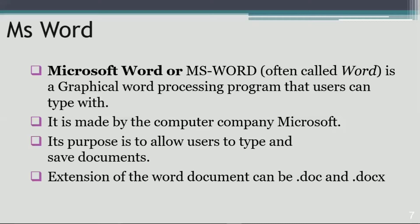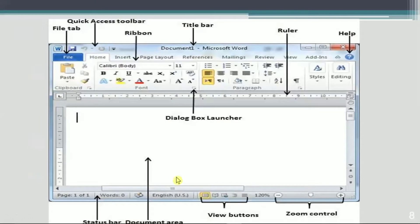MS Word is paid software whose purpose is to allow users to type and save documents. The extension of a Word document can be .doc or .docx. The extension tells us which kind of document it is. For versions of MS Word above 2007, the extension will be .docx, and for versions below 2007, the extension will be .doc.